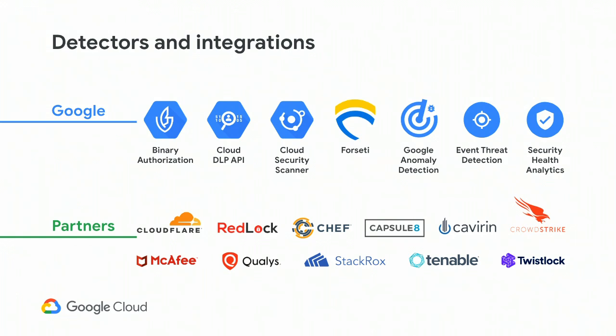Cloud Security Command Center was built for a hybrid environment. People have made investments in on-prem technologies and use multi-cloud, and those don't disappear the moment you start using GCP. We've built detectors that function well with native Cloud Platform tools, we also integrate with a number of partners you may already be using, and we have capabilities to put your own monitoring data in Cloud Security Command Center to make it a holistic audit and logging tool for security and monitoring insights.